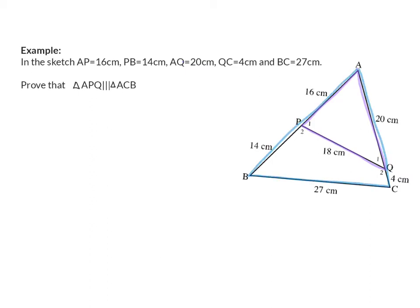For our small triangle, we already know all the side lengths. For the big triangle, AB is 30 centimeters, AC is 24 centimeters, and we already know that BC is 27 centimeters.